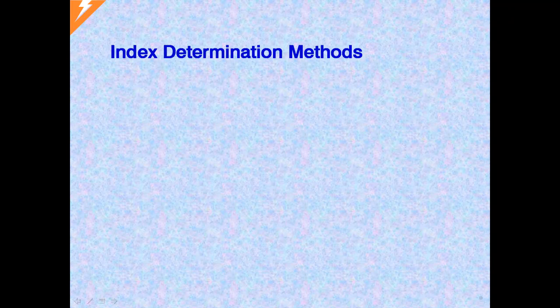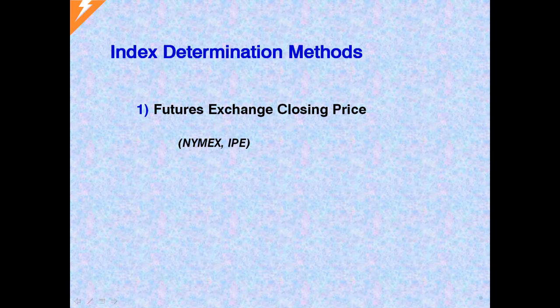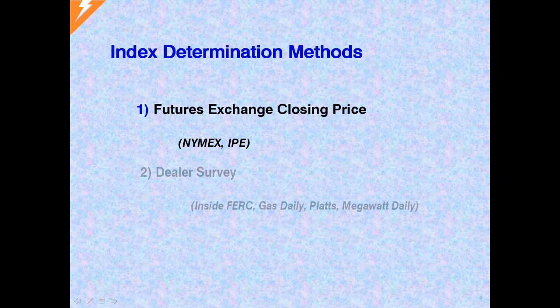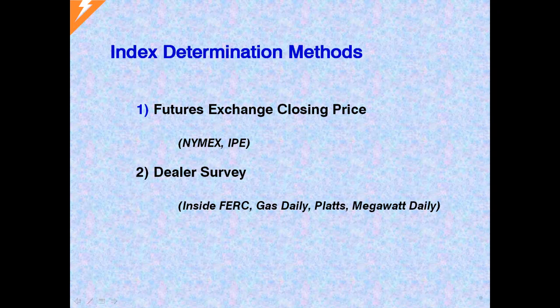The posted index can be specified using any of several methods. One of the most acceptable methods is to use the closing price of an energy futures contract on a specified date, most commonly being the last trading day before delivery month. This is in many ways ideal as it is a transparent form of price discovery, clearly capturing the market clearing price. For pricing where there is no futures market, index can be determined by a survey among major dealers and marketers. They report their trades and prices, and using some type of weighted method, a market index price is calculated.